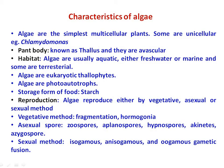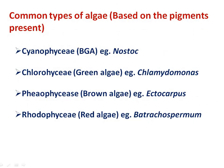The vegetative method of reproduction takes place by fragmentation and hormogonia. The asexual method of reproduction takes place by the formation of different types of asexual spores, like zoospores, aplanospores, hypnospores, akinetes, and azygospores. The sexual method of reproduction is of three types: isogamous, anisogamous, and oogamous.